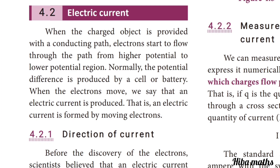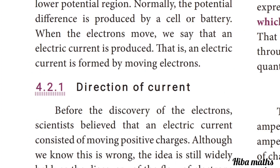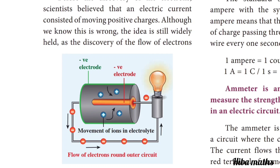At this topic, the direction of current. If there is a current, we will know the direction of current flow. Before the discovery of electrons, scientists believed that an electric current consists of moving positive charges. Although we know this is wrong, the idea is still widely held since the discovery of the flow of electrons.